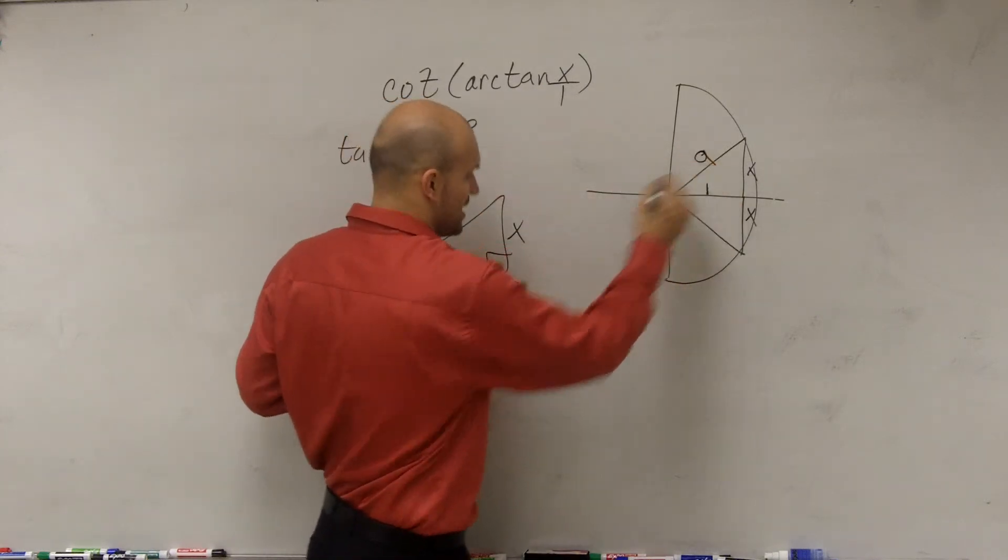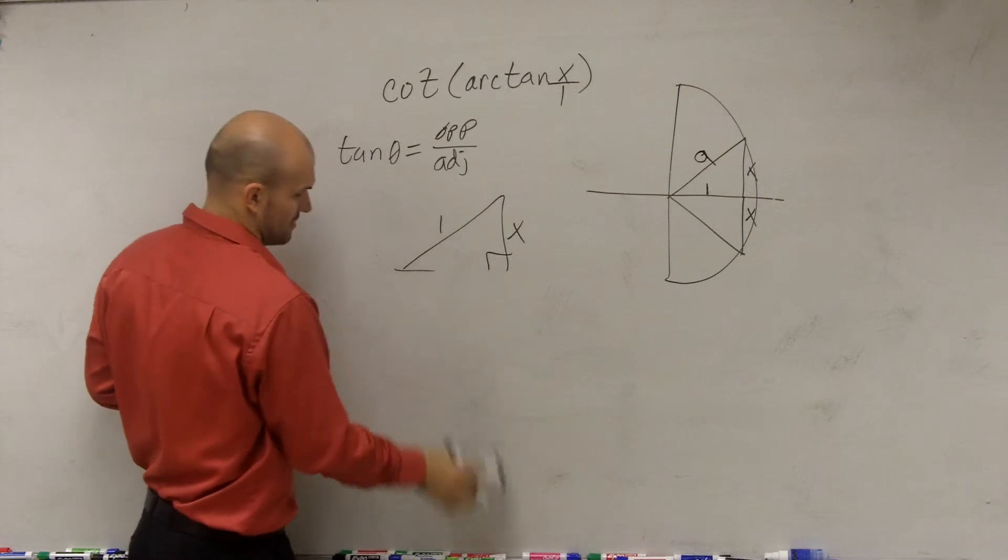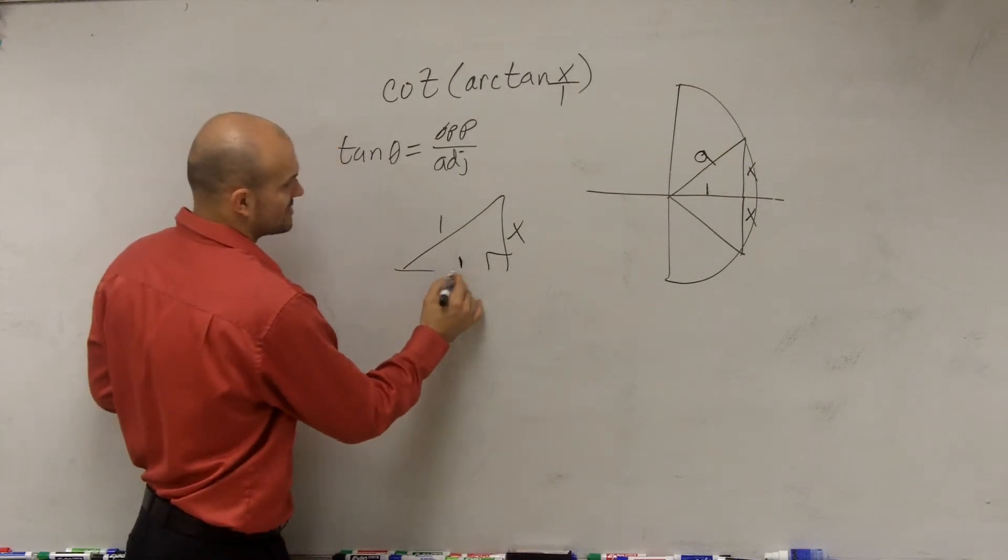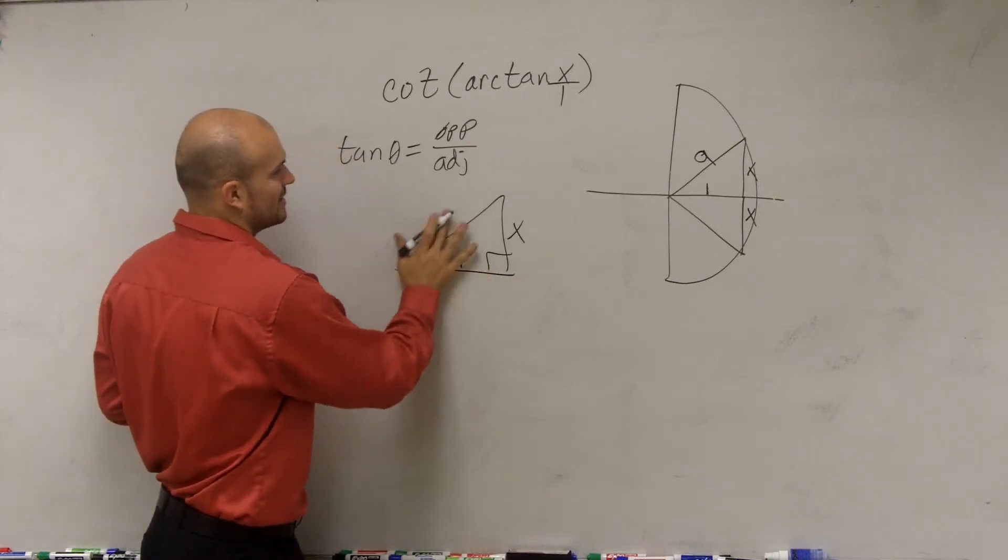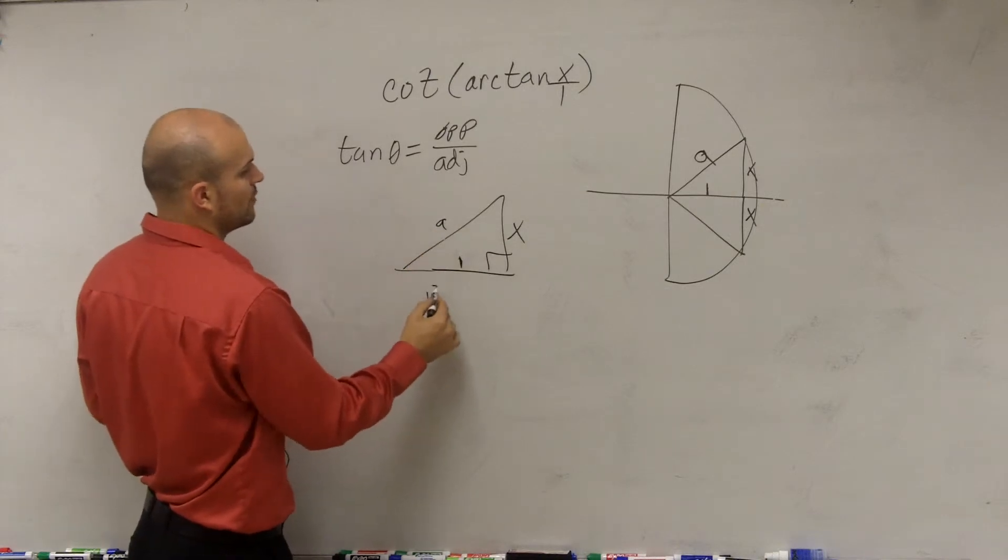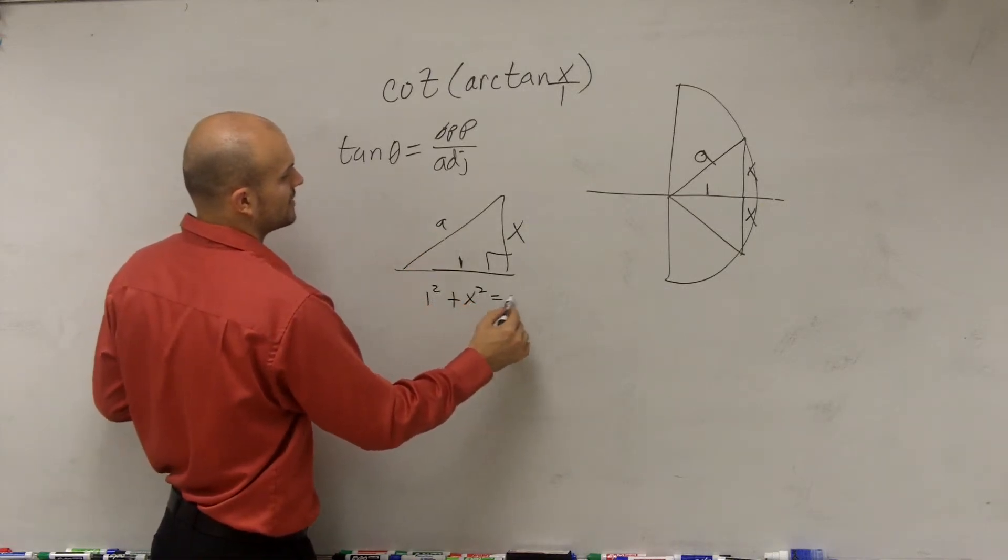We know that distance is 1. We don't know what a is right here. So therefore, it's going to be 1 squared plus x squared equals a squared. Now to solve for a, you square root both sides, and therefore,